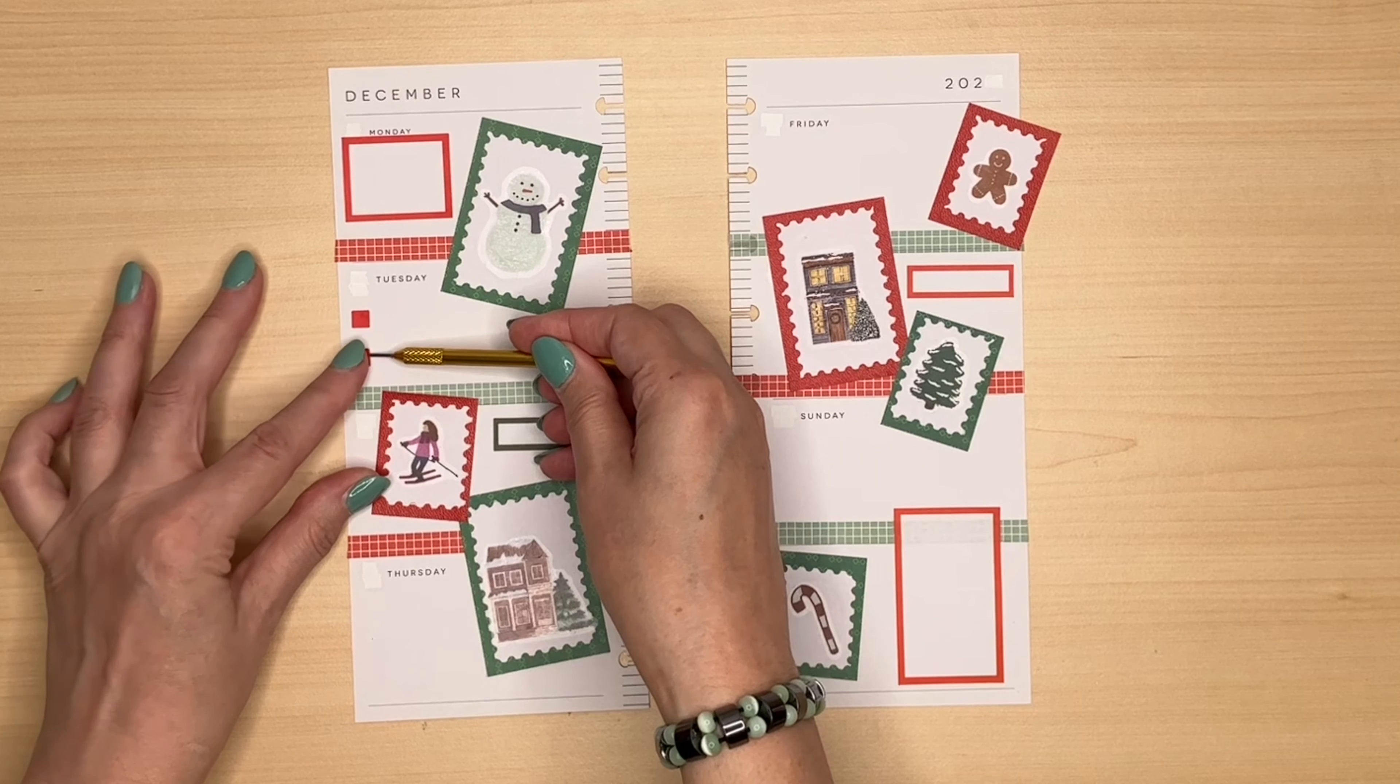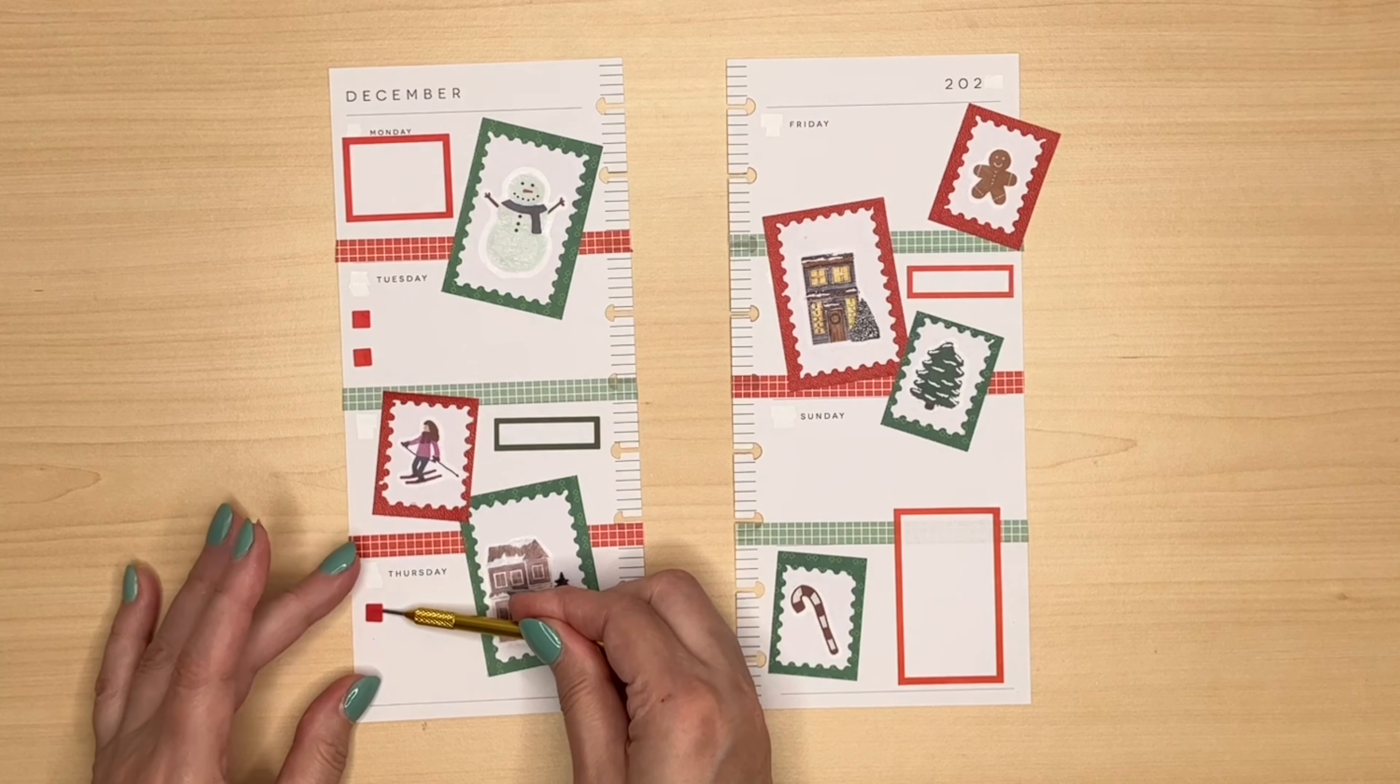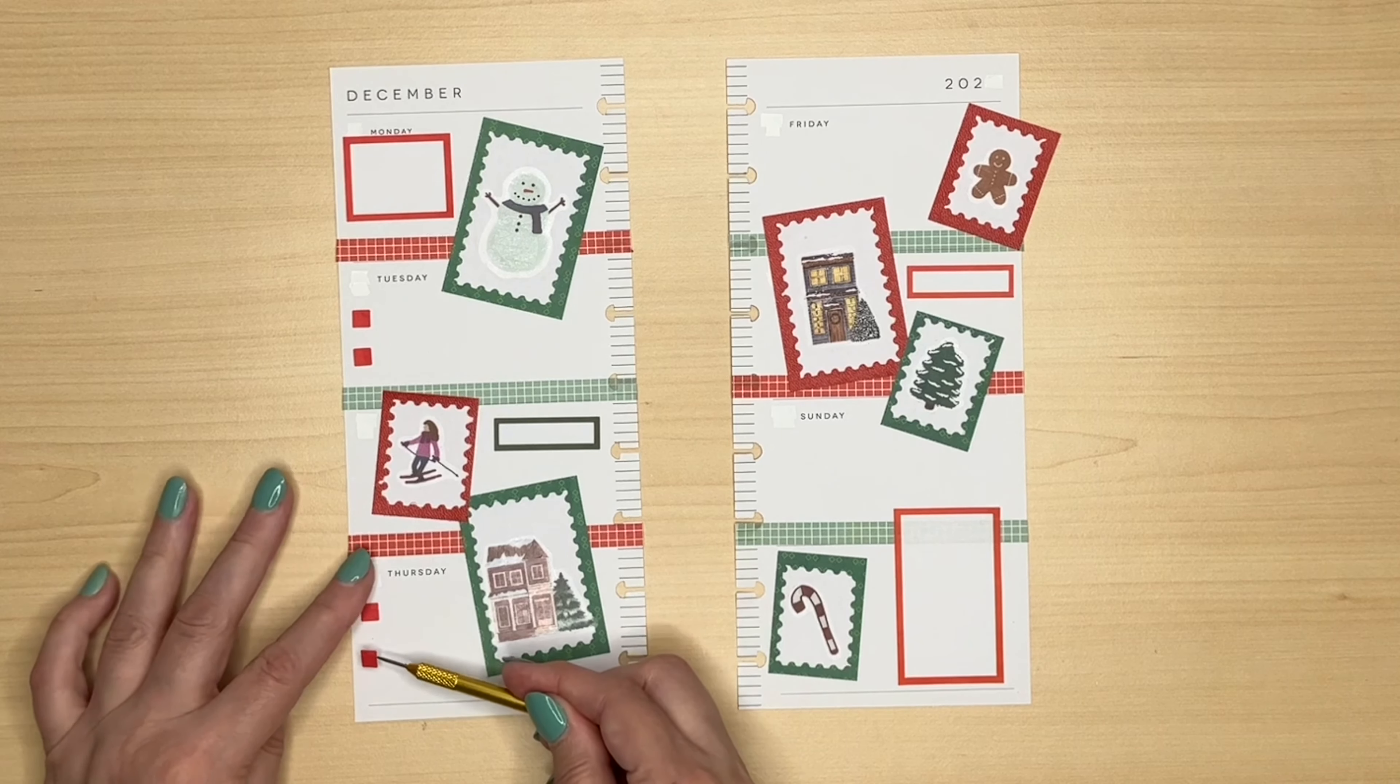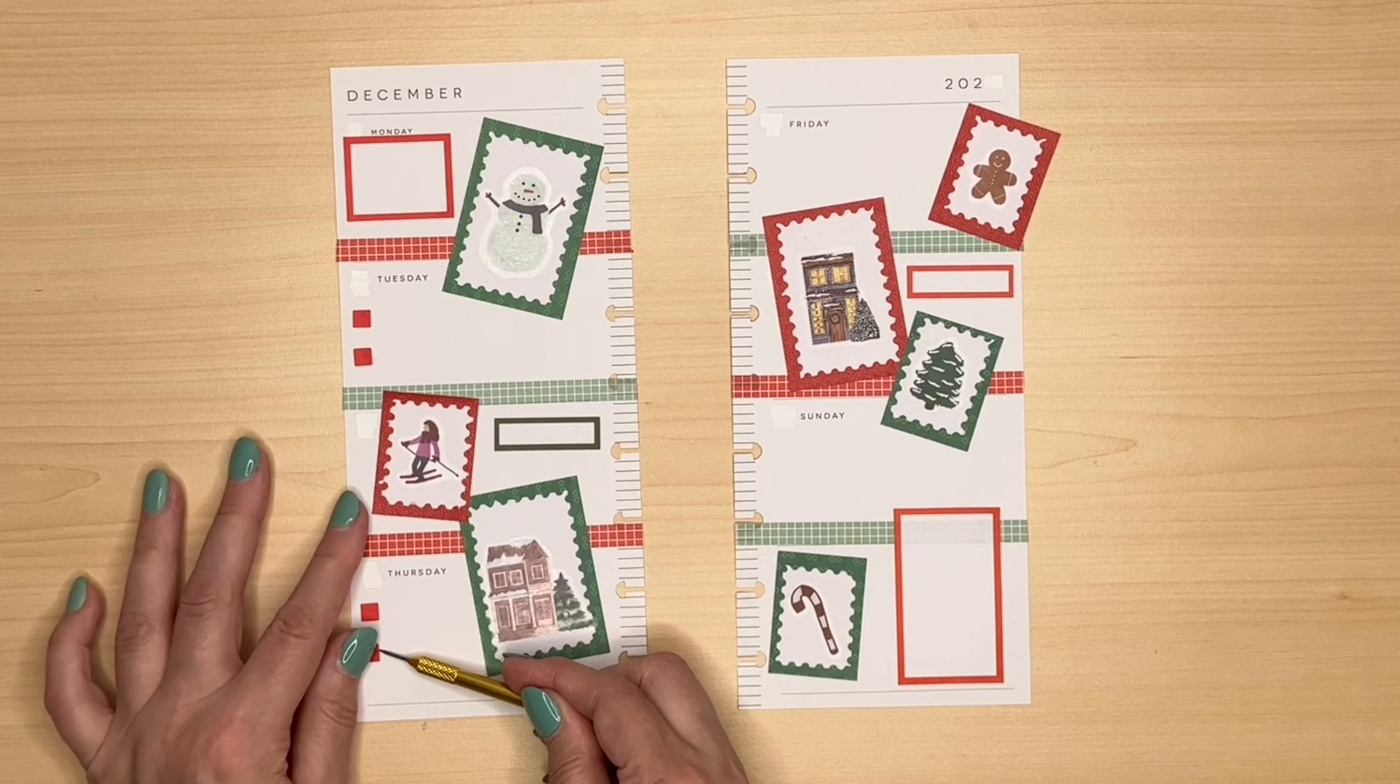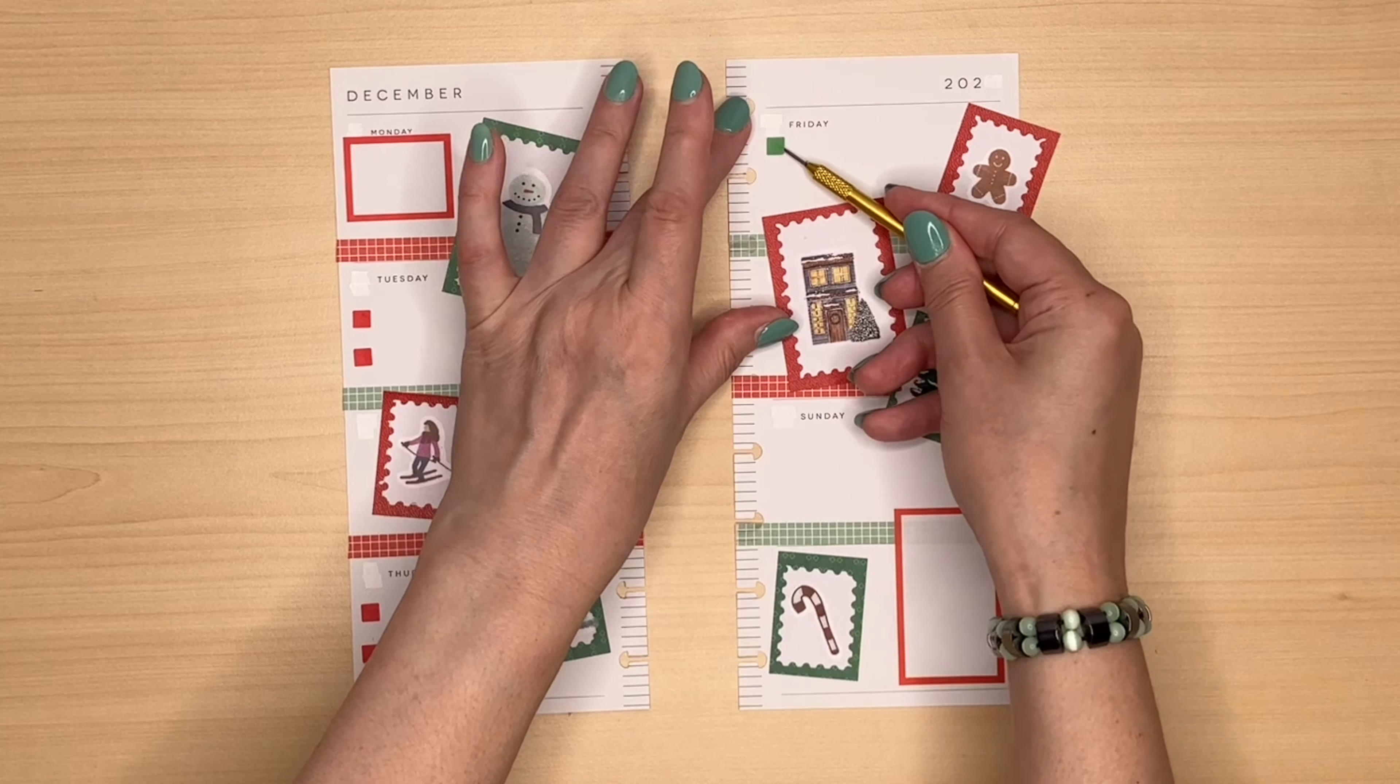In my classic vertical planner I've stuck mainly to more pastel tones. This one is more traditional. But once again I've found I've got so many Christmas stickers I was hoping to use this year and they're going to have to wait for next year.